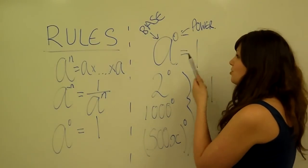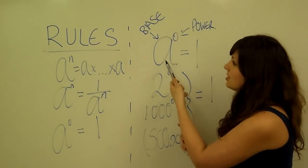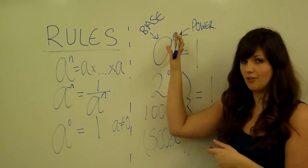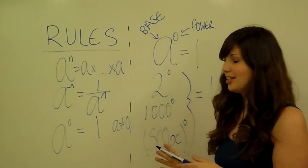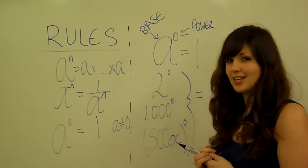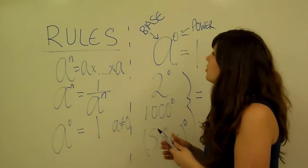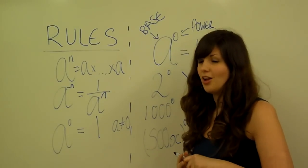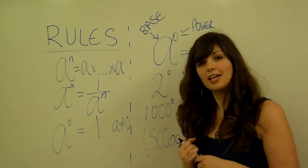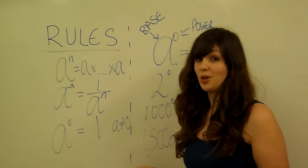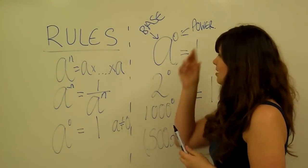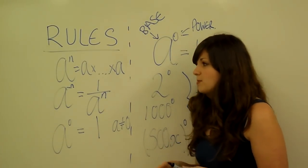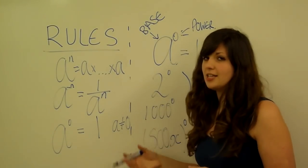There's only one instance where this isn't true, and that's when your base is equal to 0. So if we have 0 to the power of 0, then this isn't necessarily equal to 1 — 0 is a bit of a special case. I won't be getting into what 0 to the power of 0 is in this video, but I'll post a link alongside this video on the blog that explains it if you want to have a look. So that's a brief introduction to positive and negative indices. In the next video I'll be explaining how we multiply and divide indices together.